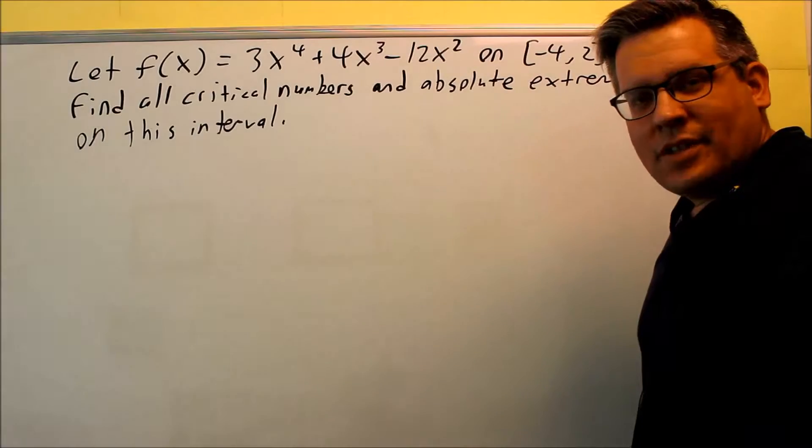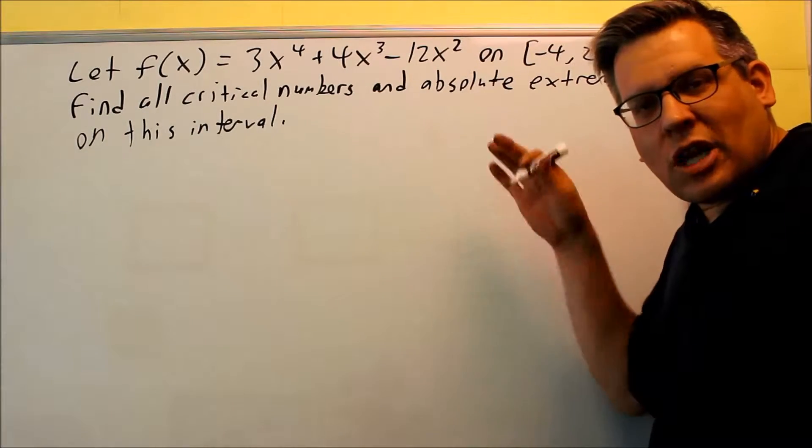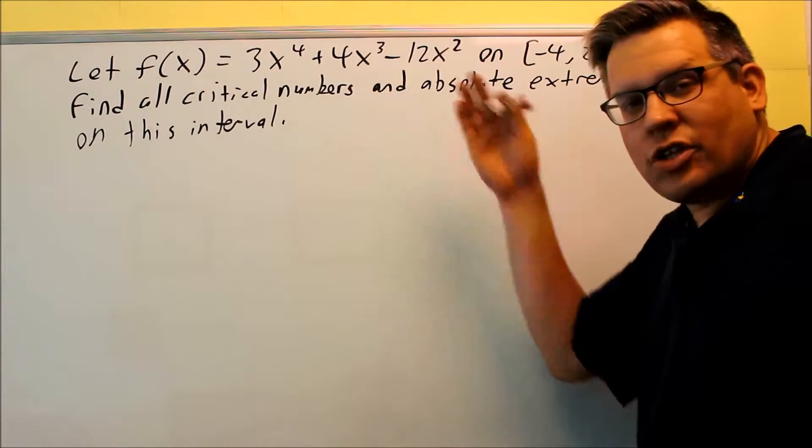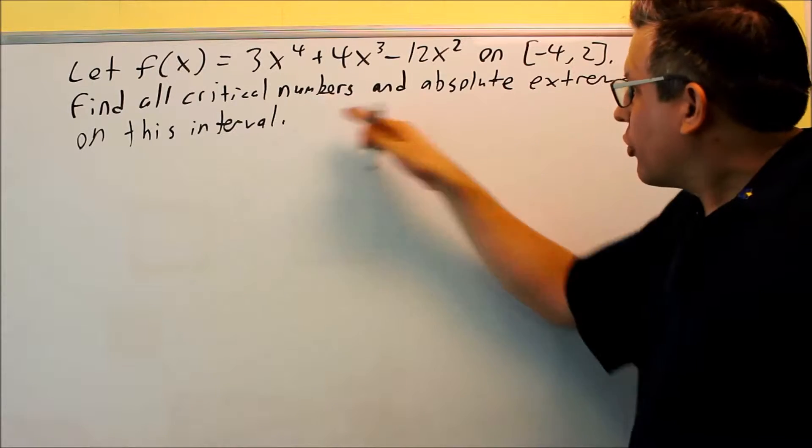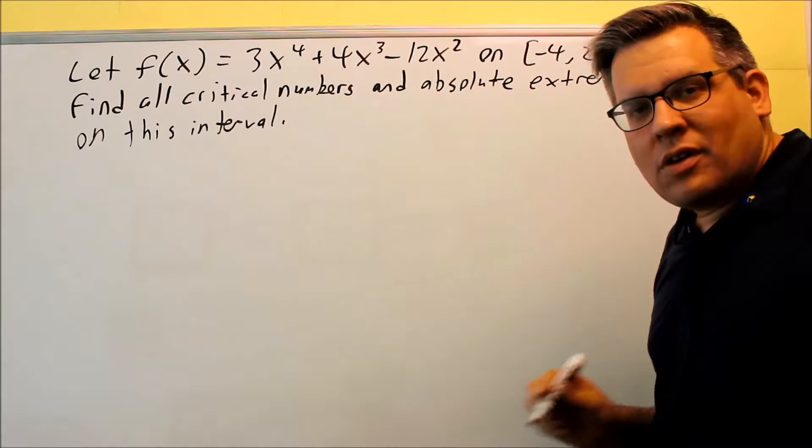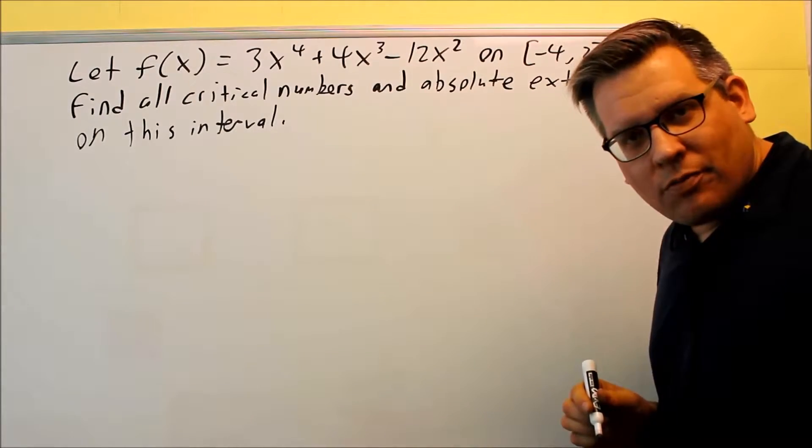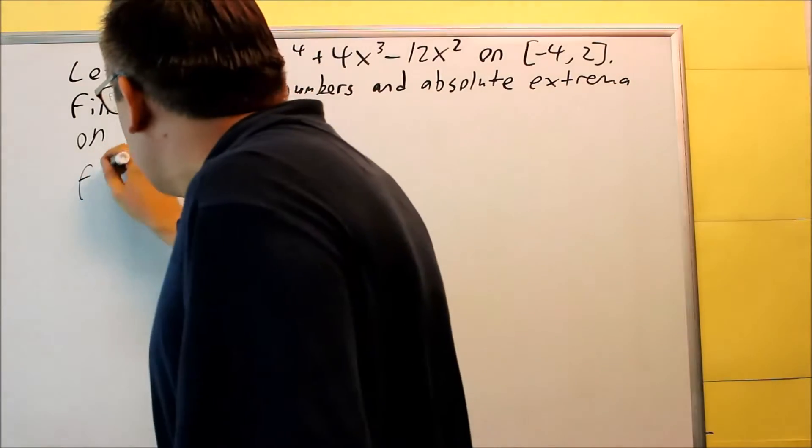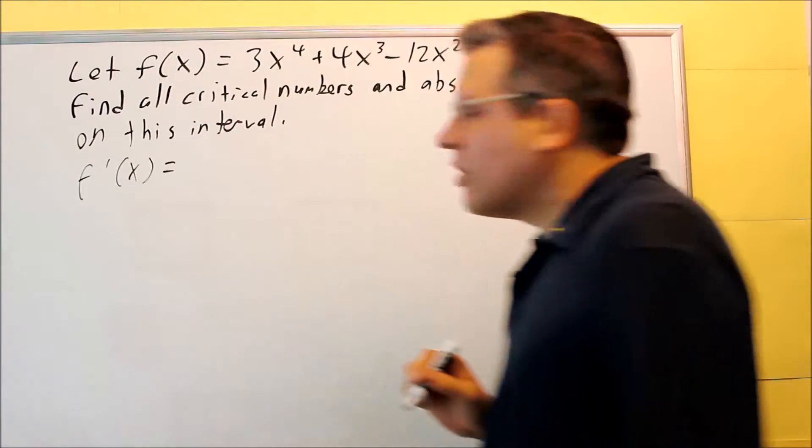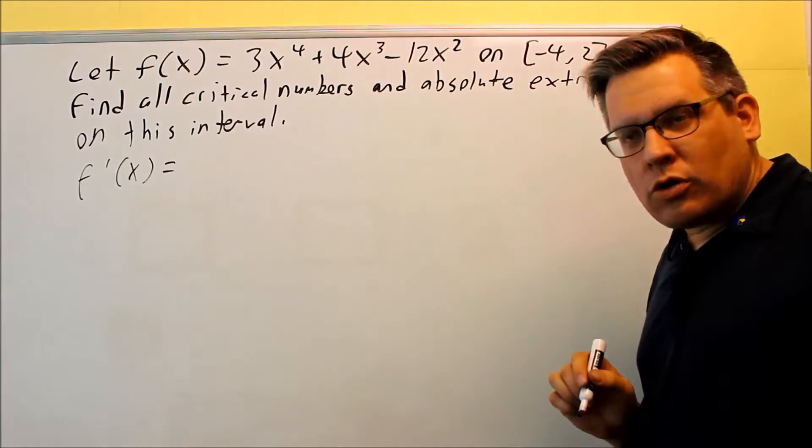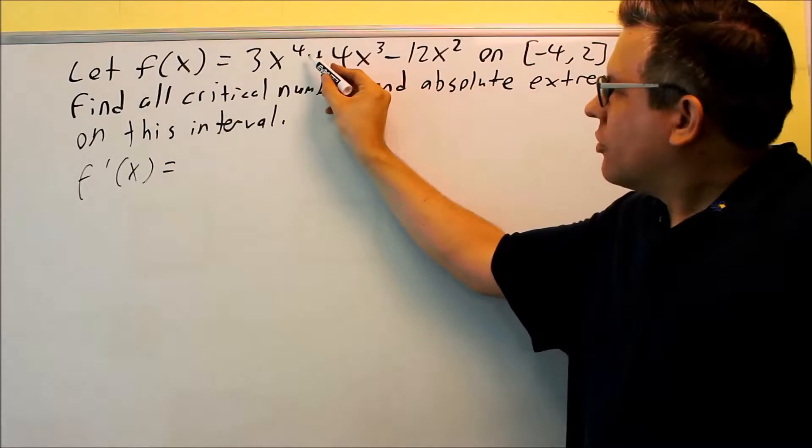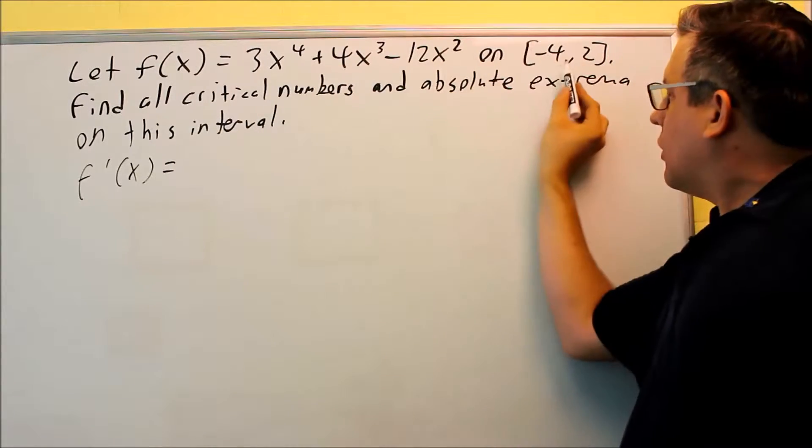So now that we've talked through all these, let me show you now an example. Now that we've looked through all those steps, let's do an example to illustrate those for finding critical numbers and the absolute extrema. Step number one says that we have to find the first derivative. To find the first derivative, we need to use the power rule. In this case, here's our function, and then there's an interval that's given.